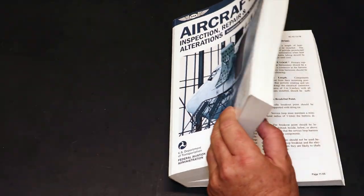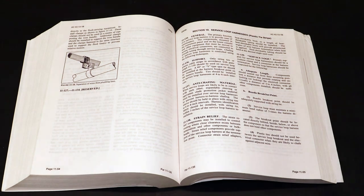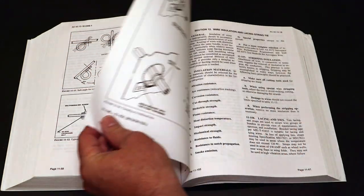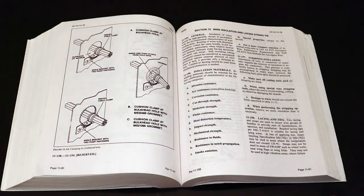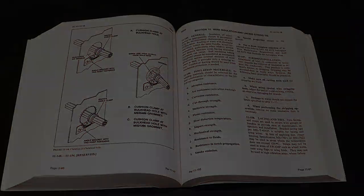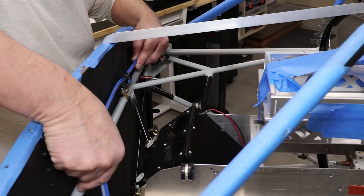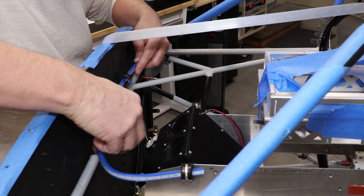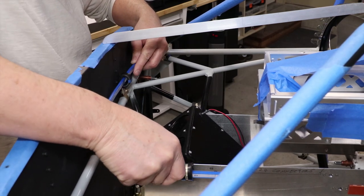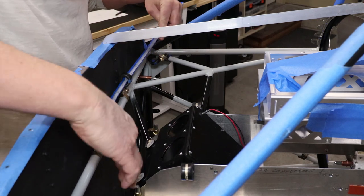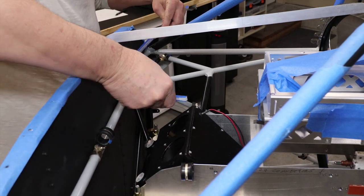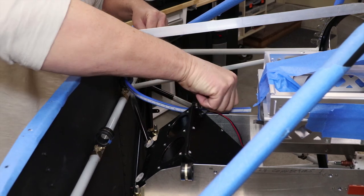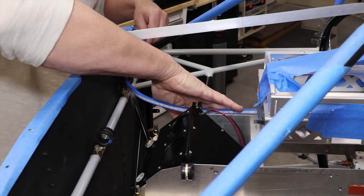Once again, the AC 43.13 offers guidance for the aircraft builder. It provides detailed methods for both placement of the Adel clamps and routing of wires through the aircraft. Behind the panel, the plan was to run a spine or backbone harness with all the pigtails running from that to the various components. The backbone was run laterally high across the aft side of the firewall. This provides good height for all the pigtails to hang from and is far away from any structure.